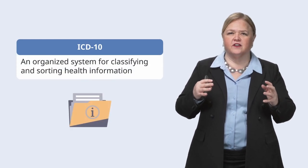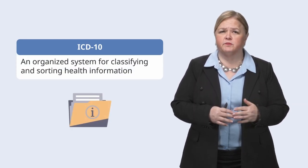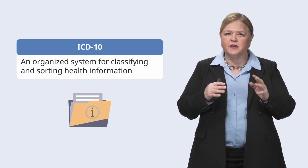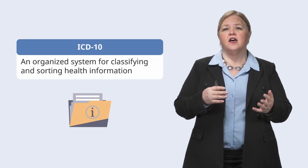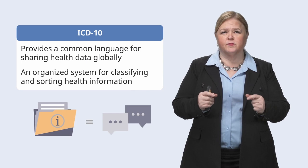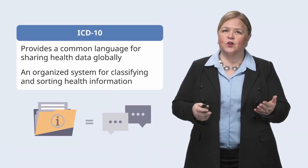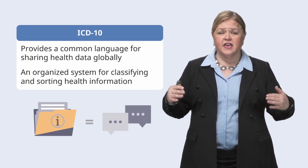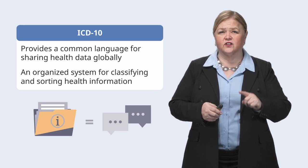Think of the ICD-10 as this super organized system for classifying and sorting information about people's health — why they might get sick or even pass away. Imagine if people from different countries wanted to share information about the health of their populations. The ICD-10 helps them do that by providing a common language. It's like what we did with the INR — the International Normalized Ratio — where we could compare lab values between different labs and different hospitals. They're all using the same references. That's all ICD-10 is: it takes the different language and things we use in different places and brings it all together with very clear definitions.